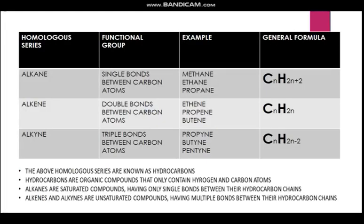Let's check out our homologous series - the different series, their functional groups, examples, and general formulae. Starting off with alkane, which is characterized by single bonds between the carbon atoms. Examples are methane, ethane, and propane. You can see the suffix of the homologous series name is the suffix of the chemical names.